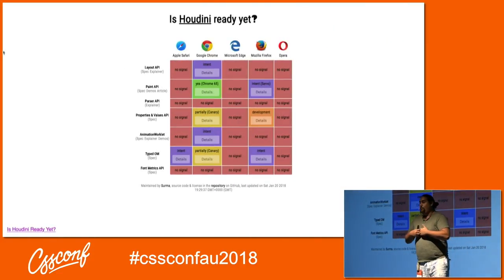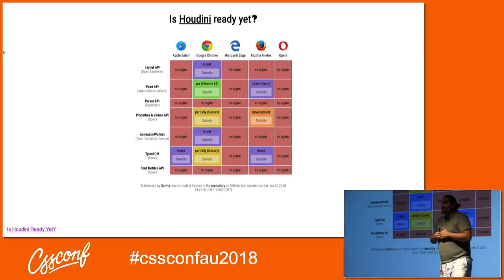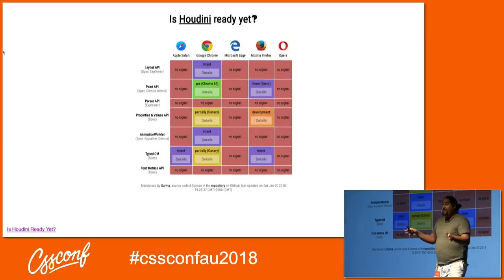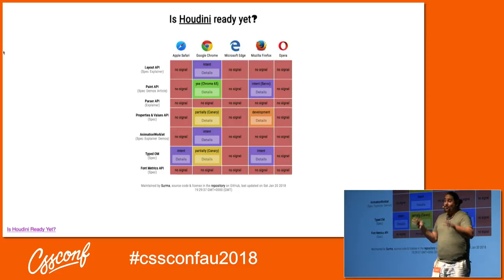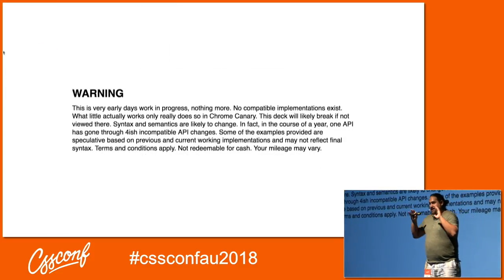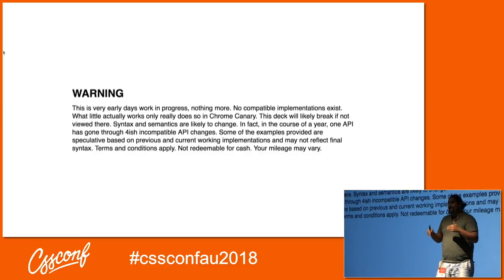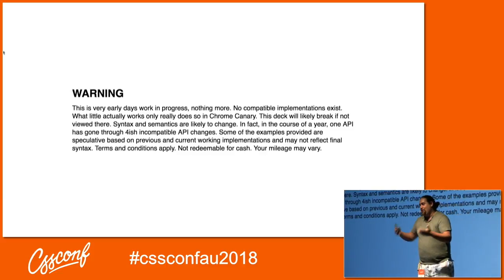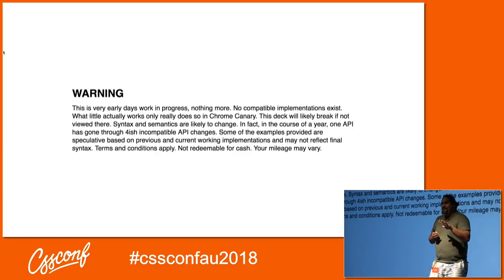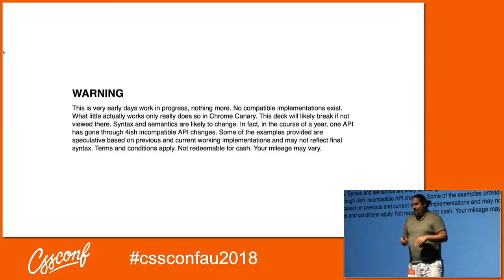The first question I get is: can we use Houdini? The answer, unequivocally, is no. This is not available today in browsers. Chrome just shipped kind of sort of paint, but it's not going to be able to do everything I'm showing today. Think about this as learning about CSS grid or service workers five years ago. And because you can't use it today, I have a warning: this talk is all about stuff that's in progress. There are no real compatible implementations. One of my demos literally broke this morning because I made the mistake of updating Chrome Canary. All these things really only work in Chrome Canary. I've been talking about this for about a year, and I've had four or five incompatible API breaking changes in that time. So this may not reflect the final syntax. Terms and conditions apply. Your mileage may vary.